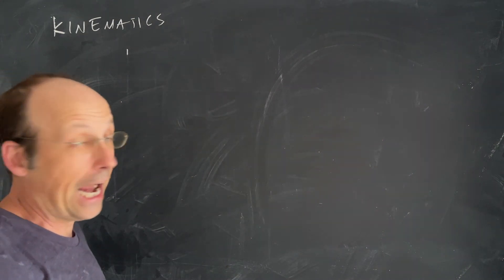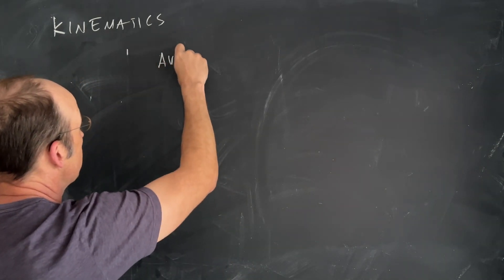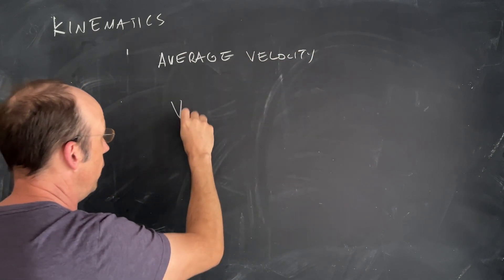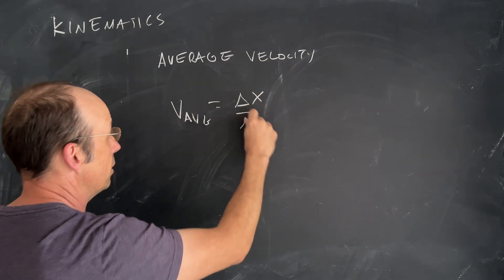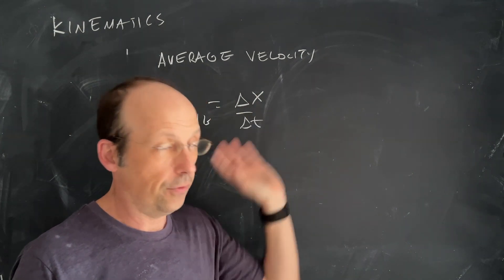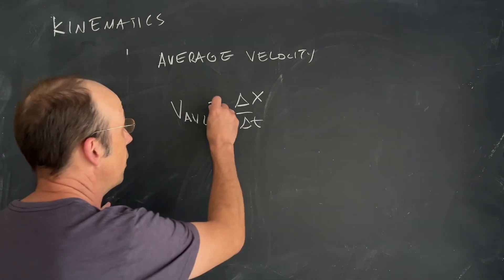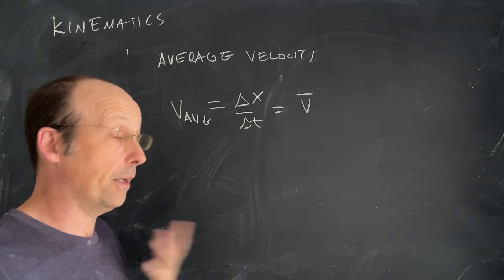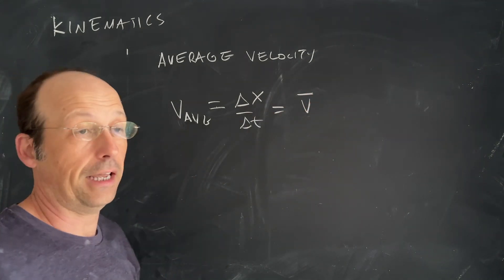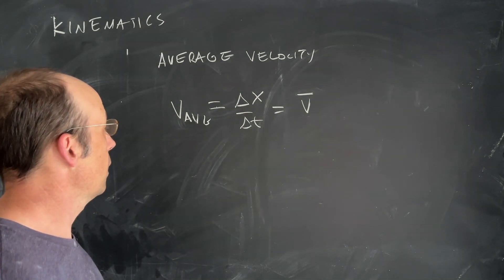The next thing we want to look at is average velocity in one dimension. We define average velocity as the change in x divided by the change in time — it is a rate of change that tells us how fast your x position is changing. The textbook writes it with a v-bar, meaning average. I prefer to write 'average' out because the bar looks like a vector arrow, and we use arrows for vectors later.